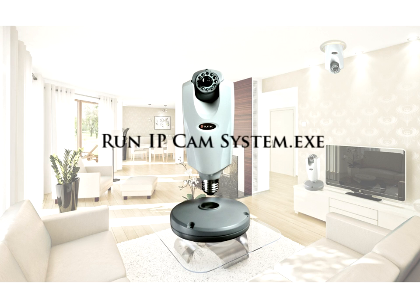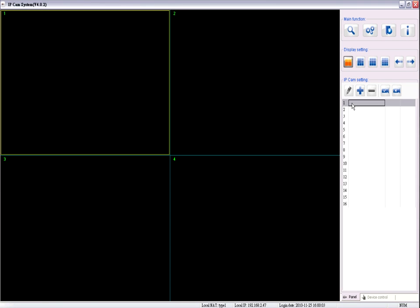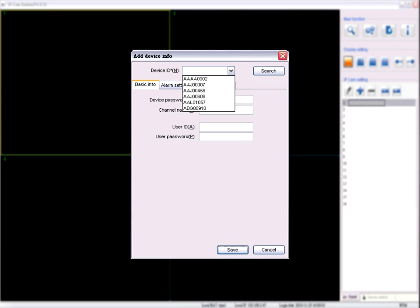Run ipcansystem.exe. Select the first channel. Click the plus icon to add a new camera. The minus icon is to remove a selected camera. Select camera list in device ID.